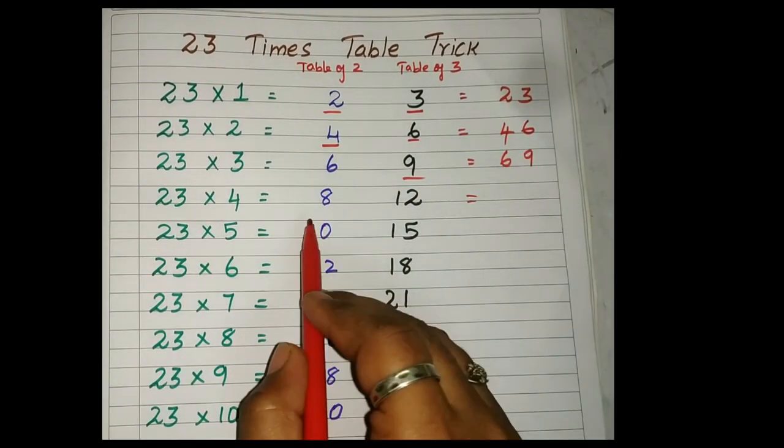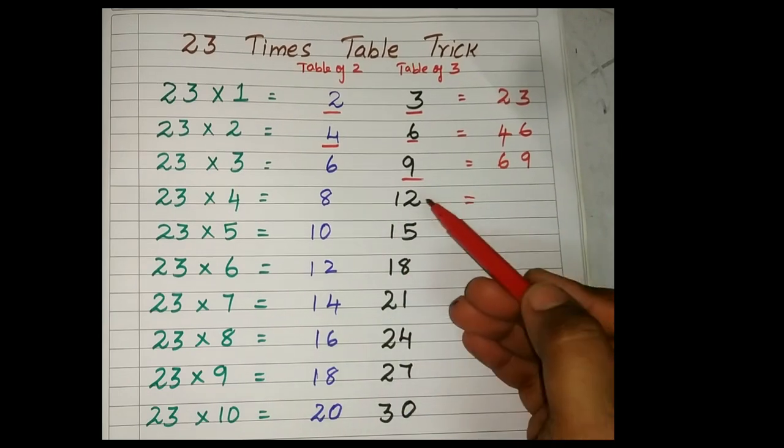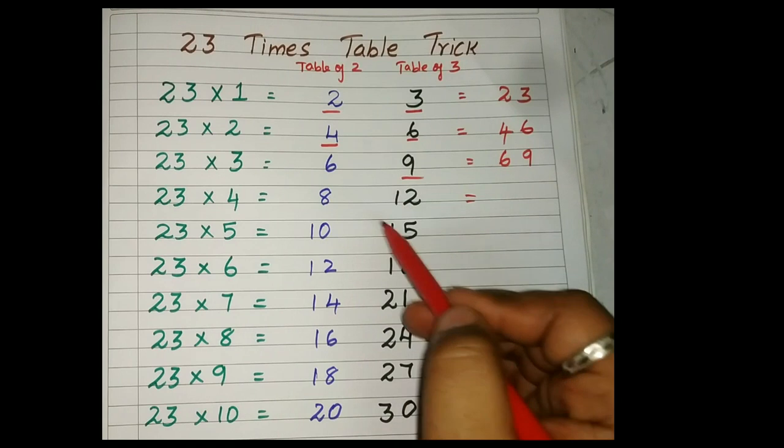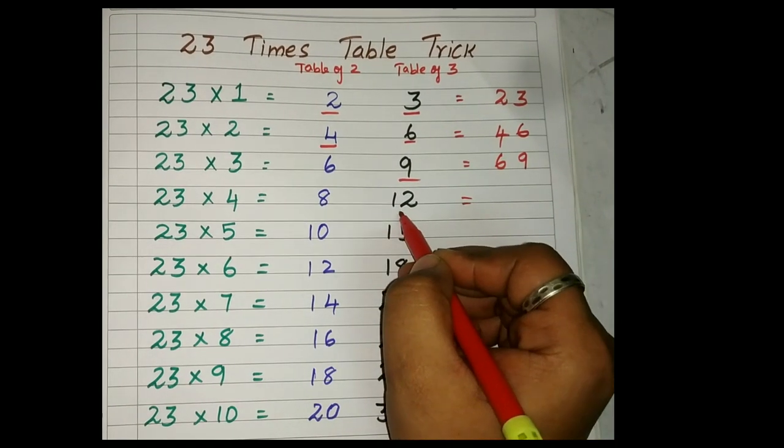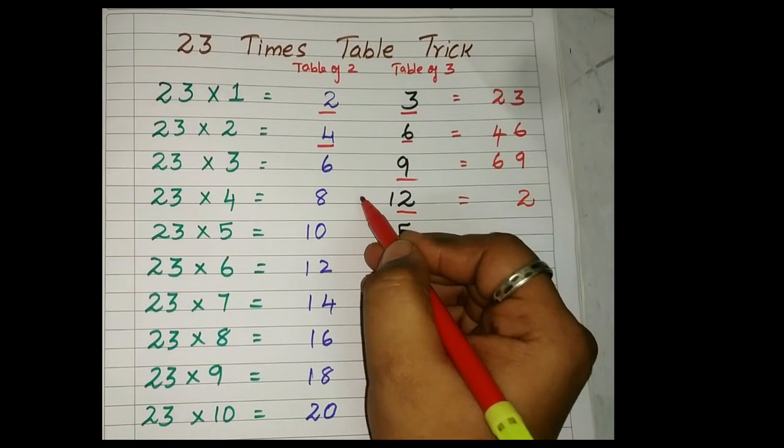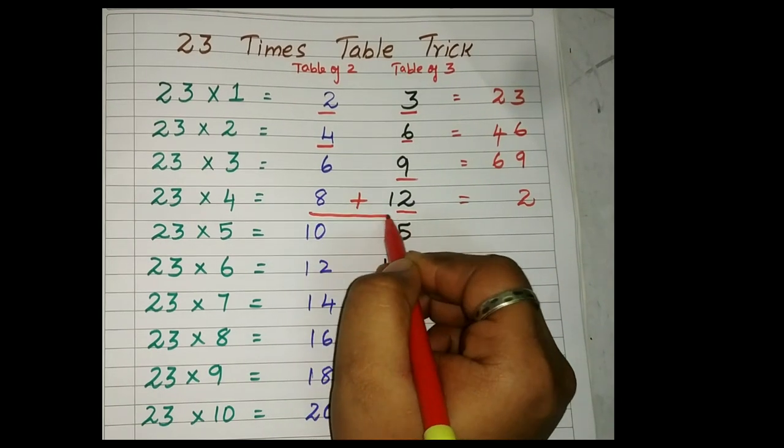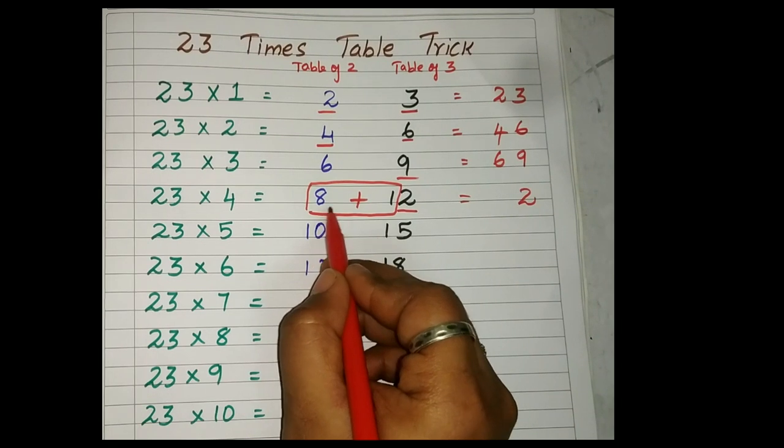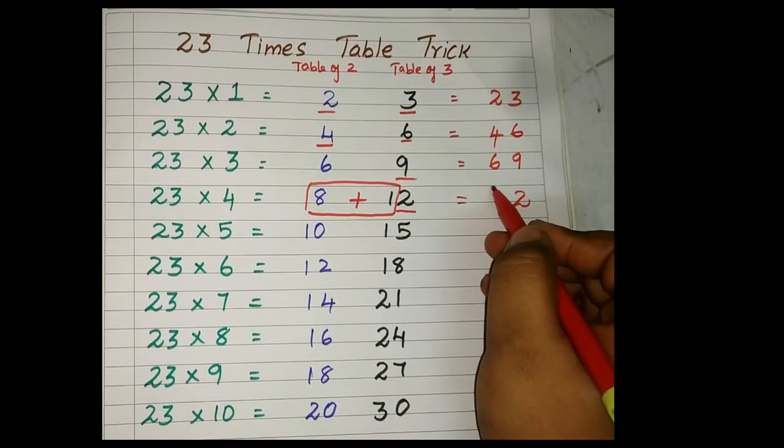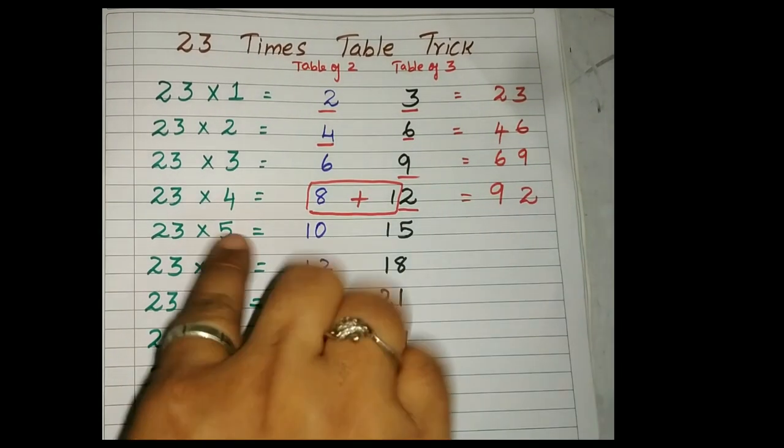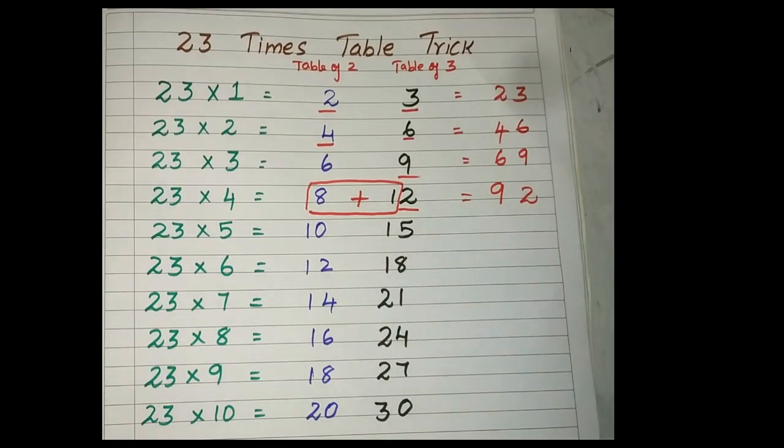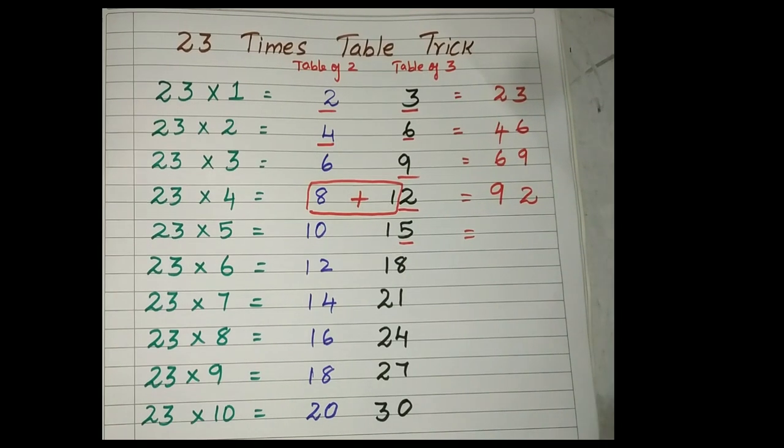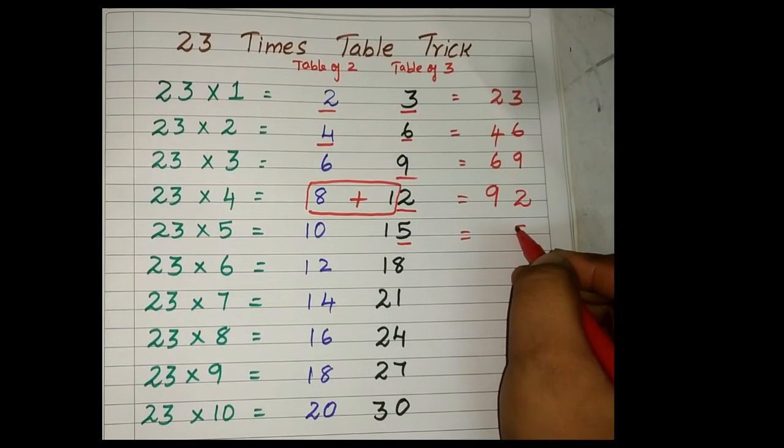Okay, we'll move on to 23 times 4. What is your 12 in ones place? Always you should be having one digit, right? So here 12 is there. What you should do? Consider this 2 as your ones. This 1, what you should do? Add it with the tens. So here what is there? 8. 8 plus 1, it is 9. 92. 23 fours are 92. Am I clear?